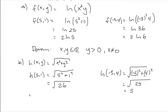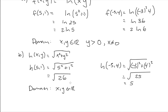Now let's talk about the domain of h. The domain starts as any real numbers x and y, and we check our restrictions. There is no denominator, so no division-by-zero issue. There are no logarithms. We do have a square root, an even root, so we need no negative numbers inside. Since x squared and y squared are always non-negative regardless of the sign of x or y, x squared plus y squared is always non-negative. So the domain of h is all real numbers x and y.